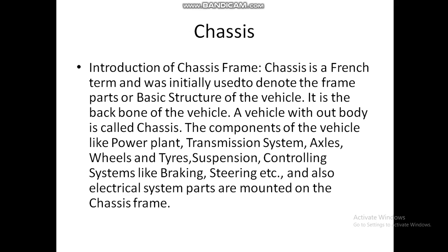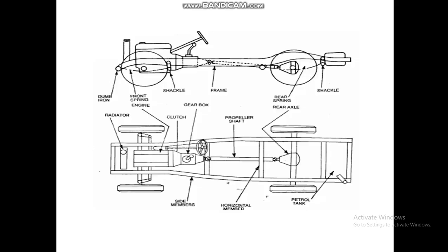All the things required to run a vehicle are attached to the Chassis. This is the simplest diagram of Chassis, showing: steering, gearbox, front spring, suspension, frame, rear bearing, rear spring, propeller shafts, universal joints, and all other control items to control the vehicle.